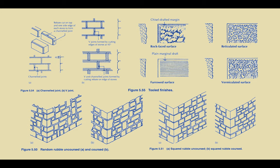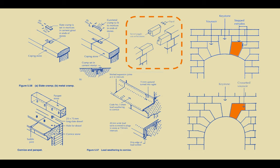Particularly focusing on the diagram provided, you should be able to identify these different finishes. The discussion on stone walls also then leads to a particular issue of cornices and parapets. Please look through that carefully to understand how different types of slate cramps or metal cramps are used in ensuring the placement of the stone cornice. The use of different kinds of weathering devices to protect the stone would also be valuable.